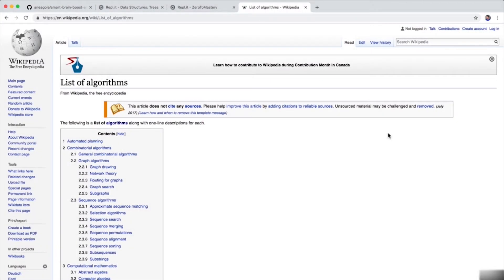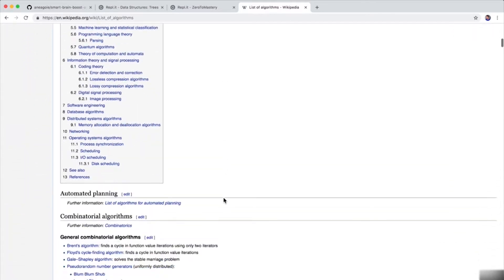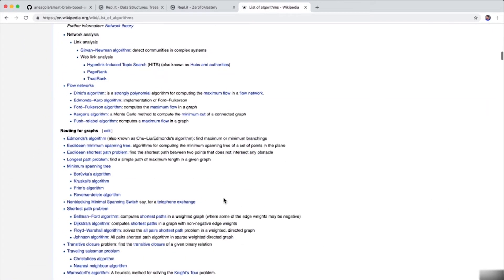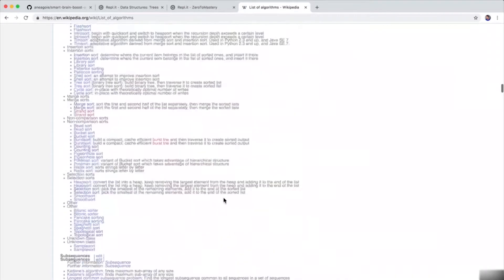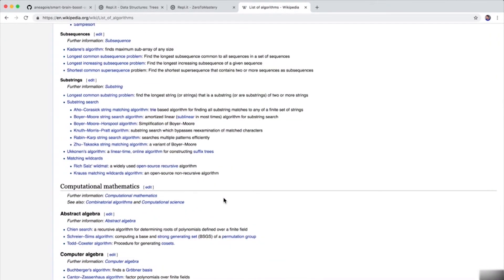If we go to Wikipedia and search 'list of algorithms,' the list is pretty endless. There are a lot of algorithms. It's impossible to know all of them. You can create your own algorithms or use other algorithms that are popular and well-established.